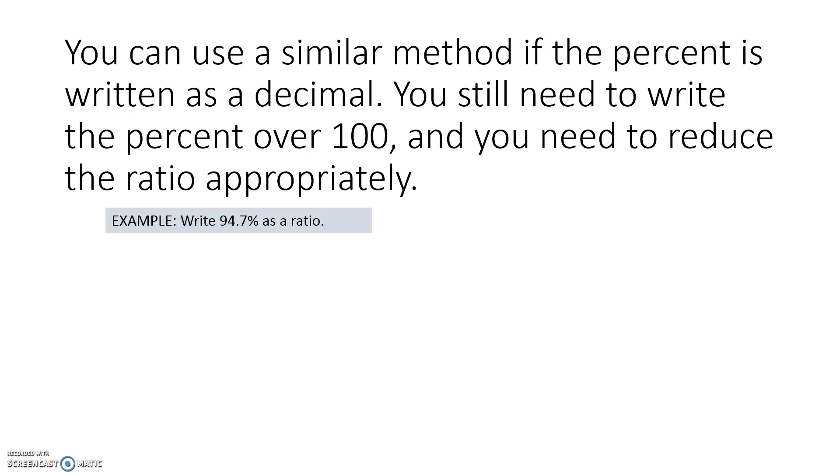Write 94.7% as a ratio. Write the percent over 100. You have 94.7 over 100. Now when you have a decimal in ratio, you have to move the decimals in both the numerator and the denominator the same number of places to create two whole numbers. We move this decimal one place to the right, and it creates a numerator of 947. And if we move the decimal one place to the right in the denominator, we have to add a zero, and we get 1000. So the ratio for 94.7% is 947 to 1000.